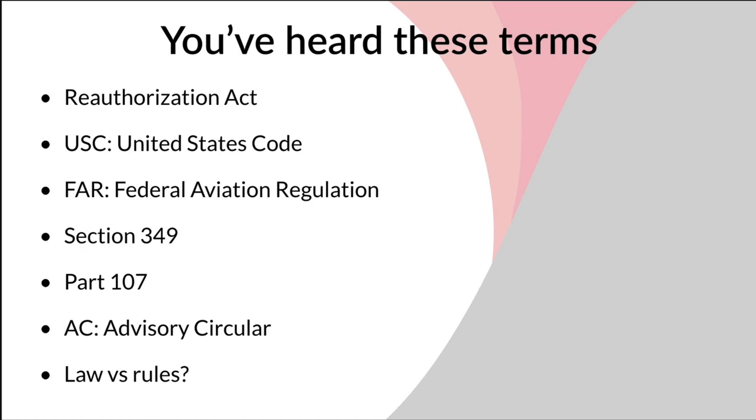You've probably heard these terms. Reauthorization Act, USC: United States Code, FAR: Federal Aviation Regulation, Section 349, Part 107, AC: Advisory Circular, and law vs rules. Sarah is going to explain how that works and what the difference is between the two. So how do we get started with this entire process? Who gets the idea that we need a new law?